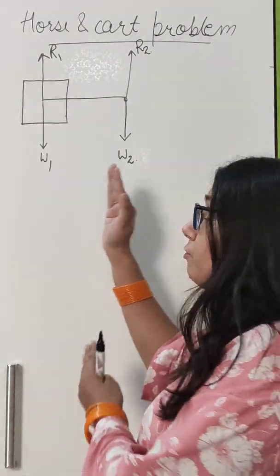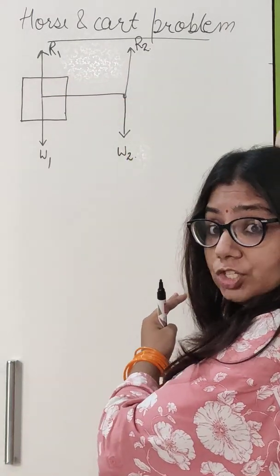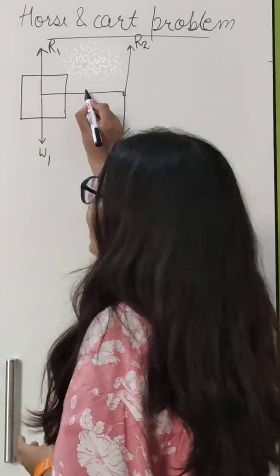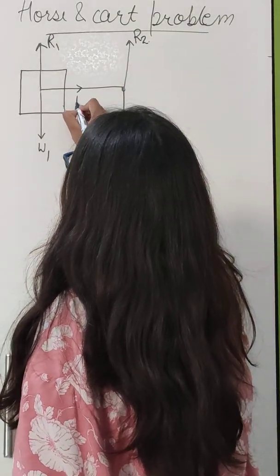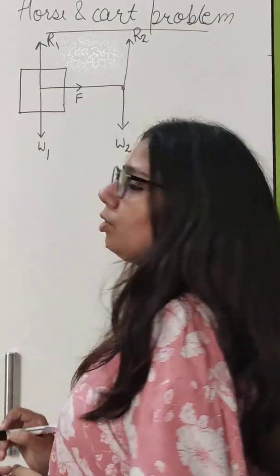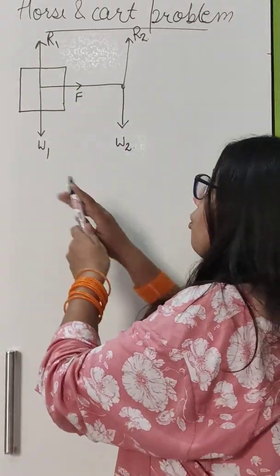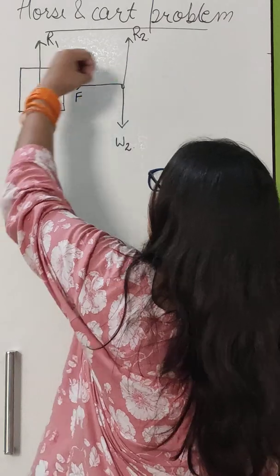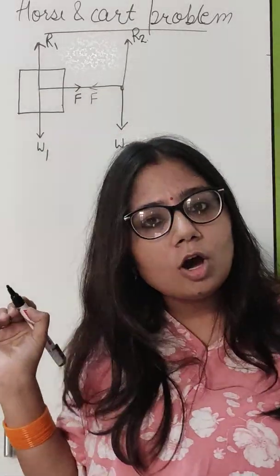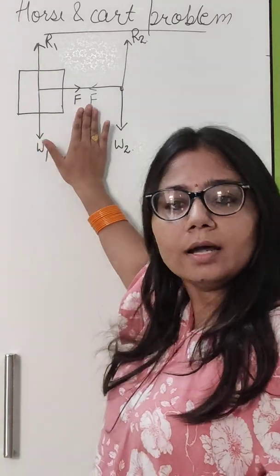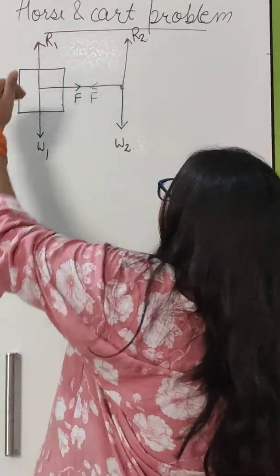When the horse is moving forward, the horse is exerting force on the cart in the forward direction by force F. This force is pulling the cart in this direction by force F. In similar way, if the horse is exerting force on the cart in the forward direction, then the cart will also pull the horse in the backward direction with the same force F according to Newton's third law. These two forces will be equal and opposite.